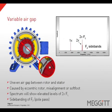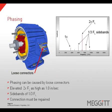Variable air gap is an uneven air gap between the rotor and the stator, typically caused by an eccentric rotor, misalignment, or soft foot. The spectrum will show elevated levels of two-times line frequency, with sidebanding around two-times line frequency spaced at pole pass frequency. Phasing can be caused by loose connectors and can be identified in the vibration spectrum by elevated levels of two-times line frequency with amplitudes as high as one inch per second. It is typical to see sidebands spaced at one-third line frequency, and when this condition exists, the connections must be repaired.